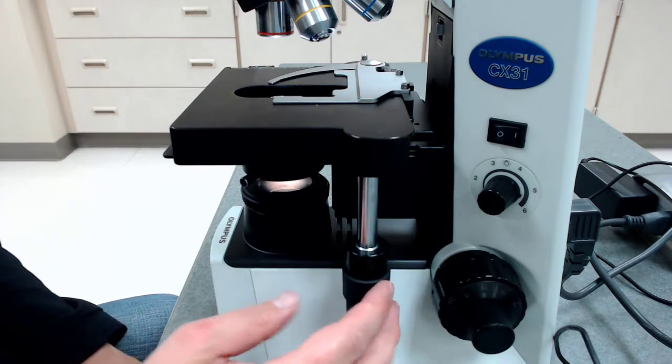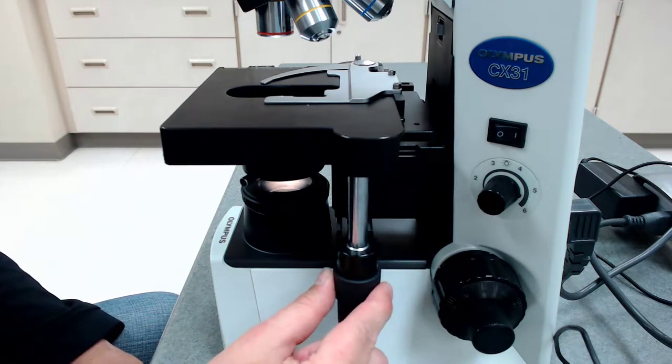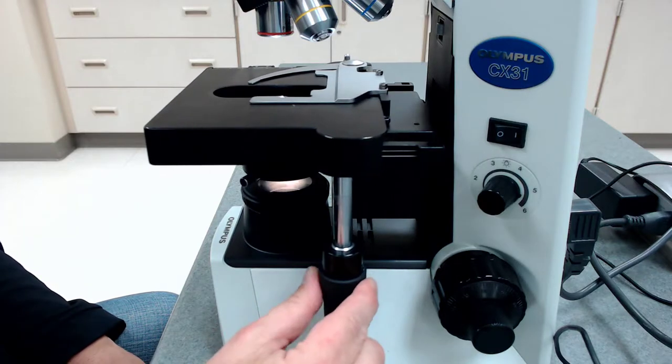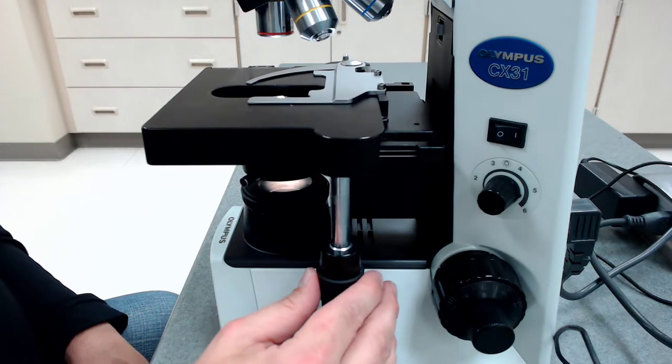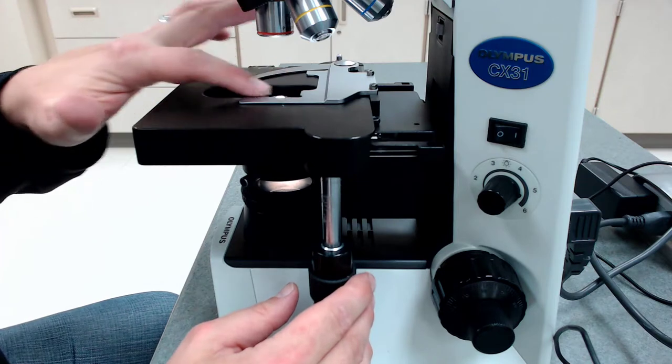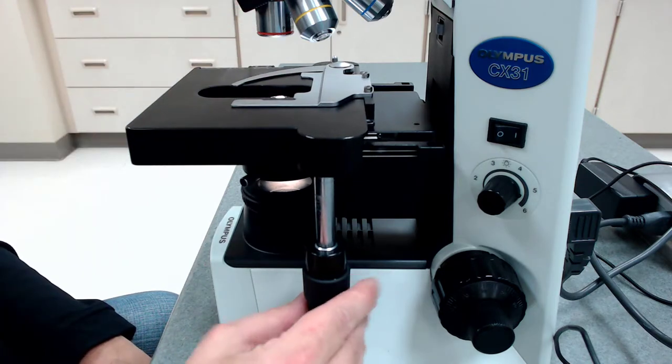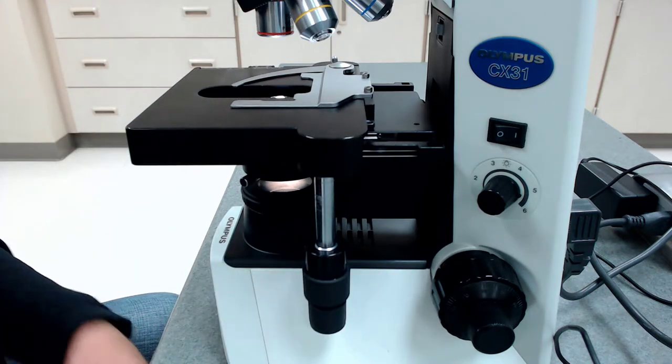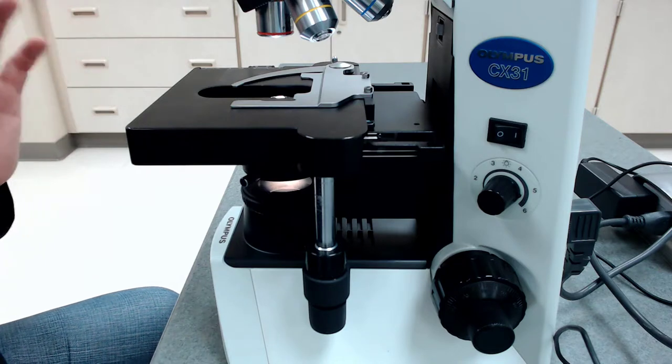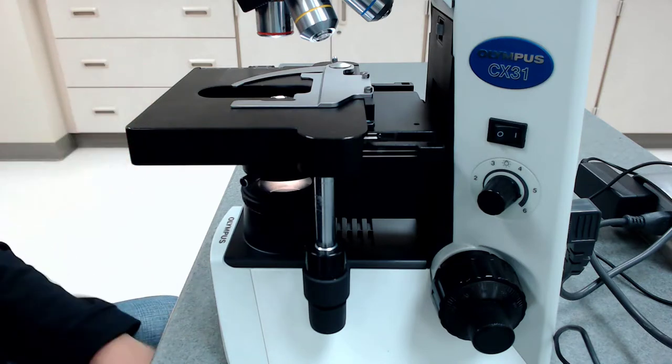And then use these knobs here that you can see at the bottom to move the stage forward and backwards and right and left. So you actually will put the slide all the way inside this bracket and then move it to the light source. A lot of times students will try to put the slide where the light is. And that can be a big problem. It just won't work very well.